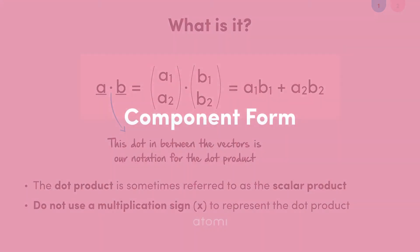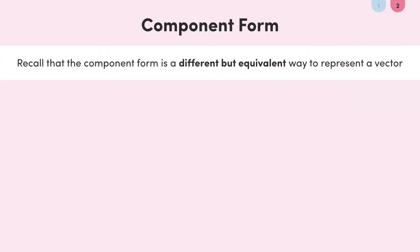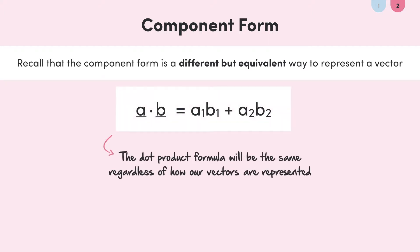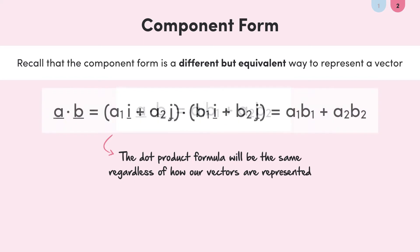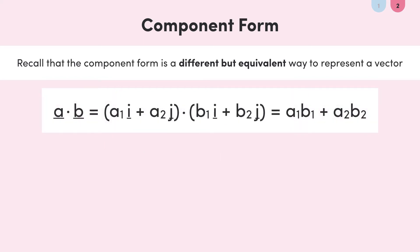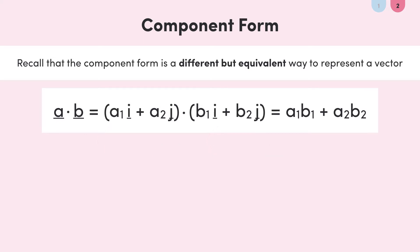So we know what the dot product is, but if we jump over to the component form of a vector, does anything change? No. The component form and the column vector form represent the exact same thing, so of course the dot product between two vectors will be the same regardless of the form. The first entry is now paired with the i unit vector and the second entry with the j unit vector, giving us A1B1 plus A2B2 — identical to before.